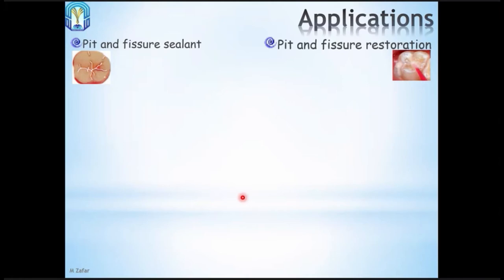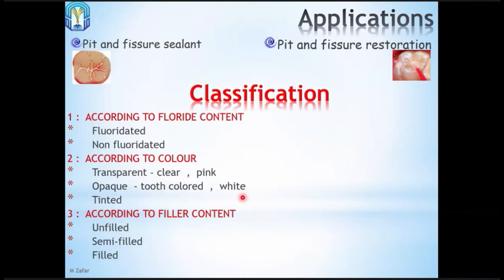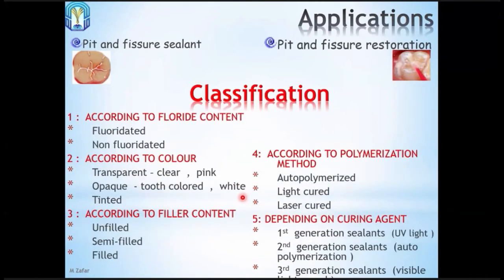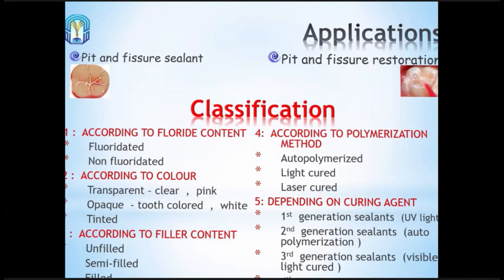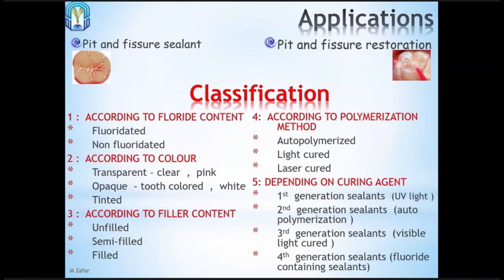A common question: what is the difference between pit and fissure sealant and pit and fissure restoration? In pit and fissure sealant, we only apply a thin seal over the pit and fissure. In pit and fissure restoration, if there is very little caries, we remove that carious spot and then seal the remaining pit and fissure system. There is very little difference between the two.